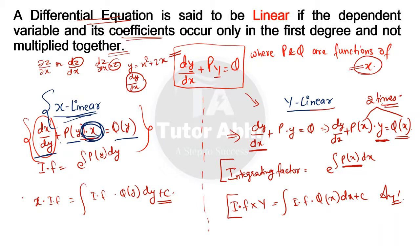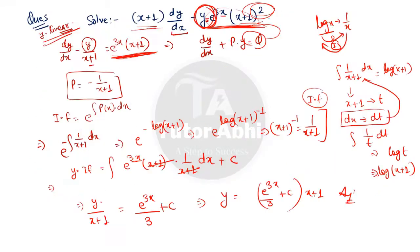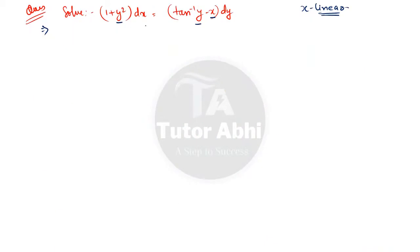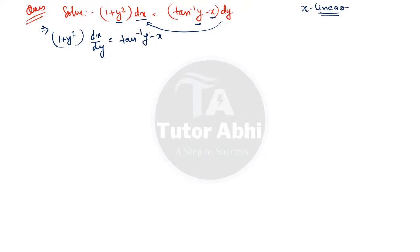We will rearrange to the standard form: dx/dy + P(y)·x = Q(y). Dividing through by (1 + y²), the equation becomes: dx/dy + x = tan⁻¹y − x. We then move x to one side to isolate dx/dy.